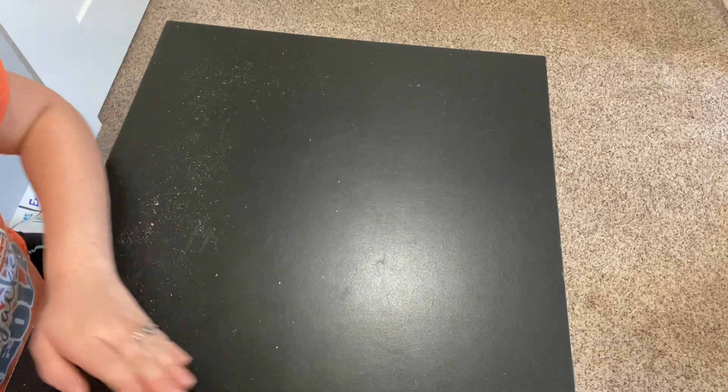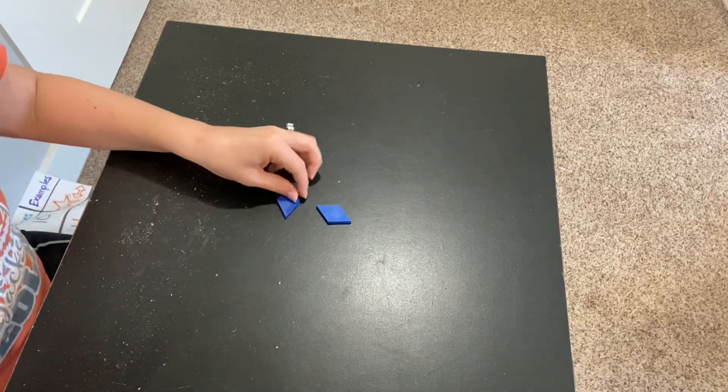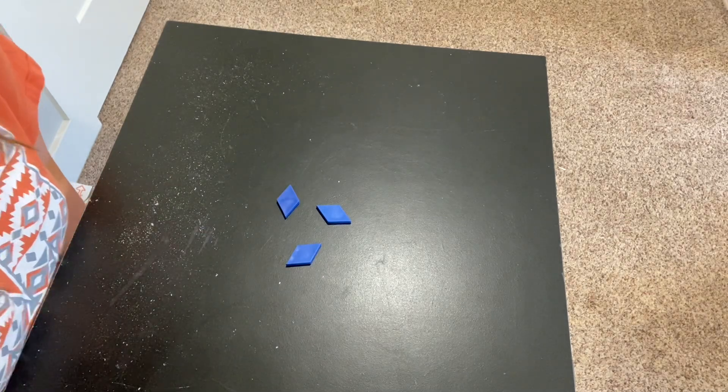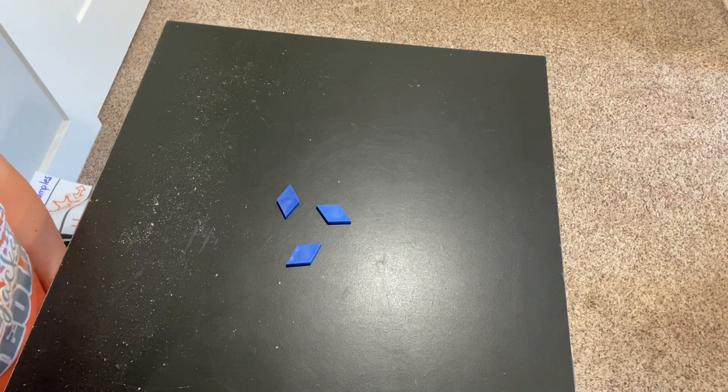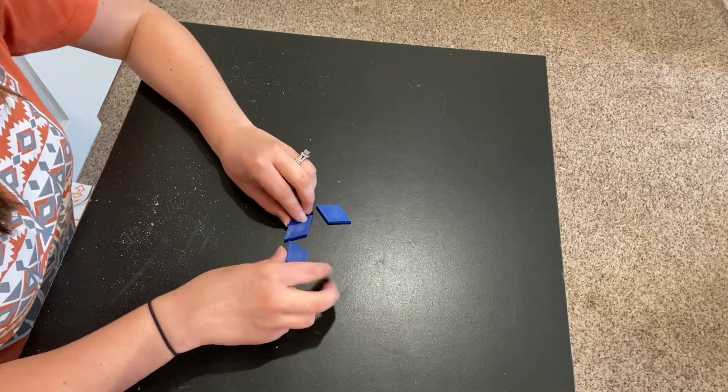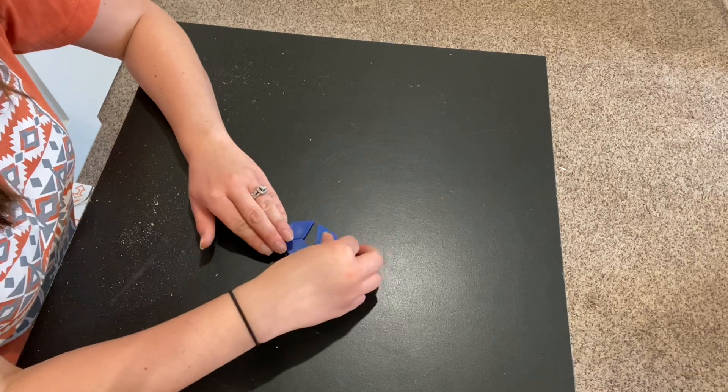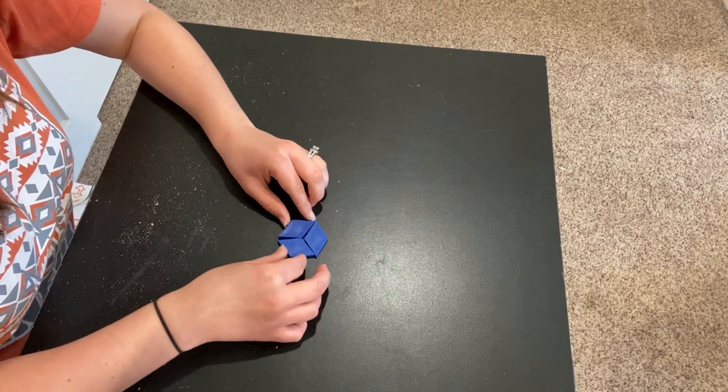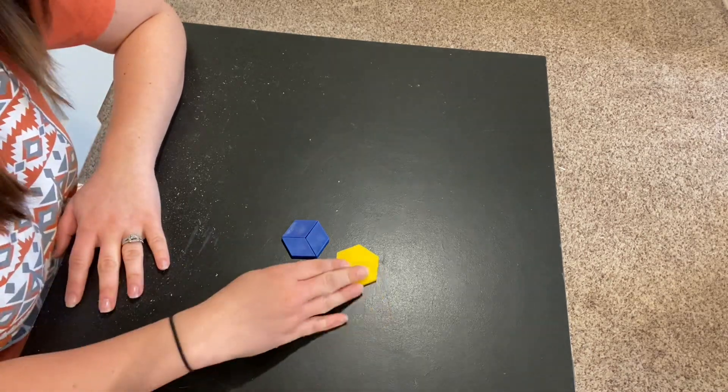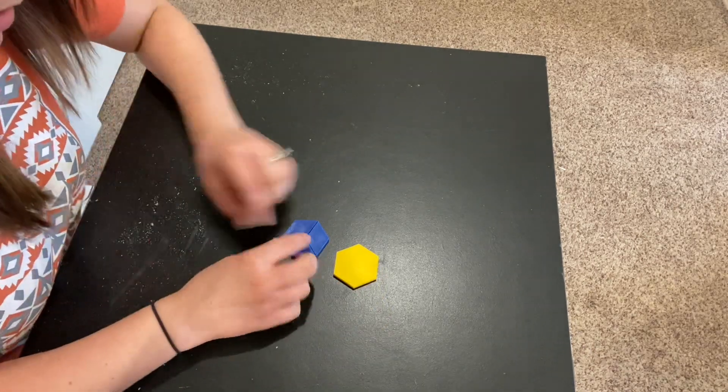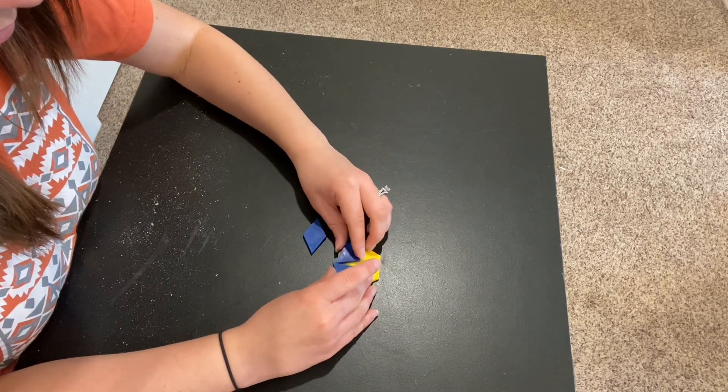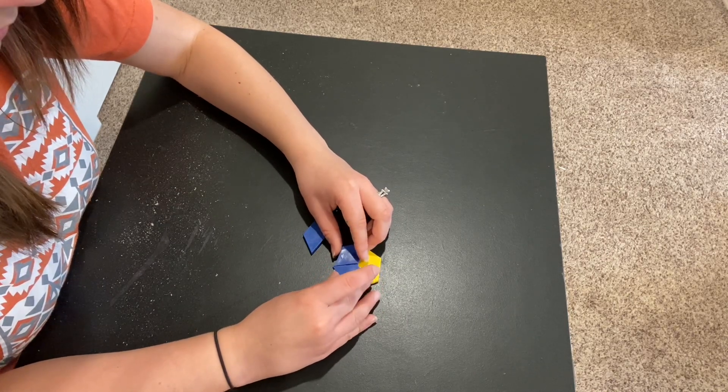What if I have three rhombuses? What shape could I compose using three rhombuses? If I put them together like this, what shape do I have? Now I have a hexagon. So you can make a hexagon using three rhombuses.